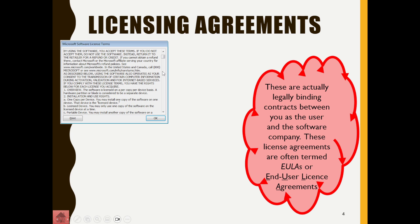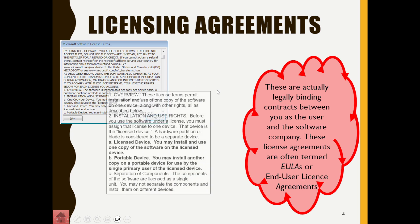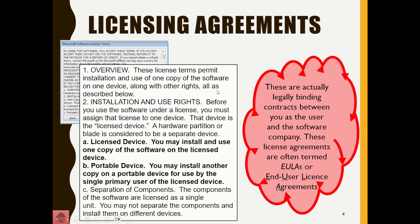They make these things unnecessarily long — especially with iTunes — but that's what it is. For example, as part of the agreement it may say: 'Before you use the software under a license, you must assign that license to one device.' This excerpt from a license agreement means that this piece of software can only be installed on one computer.